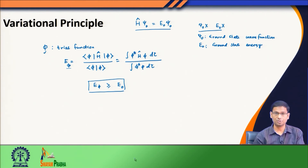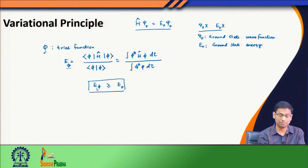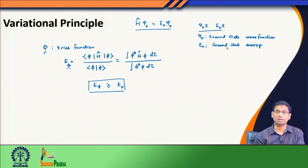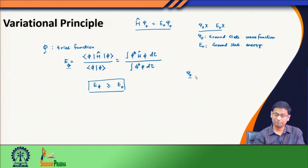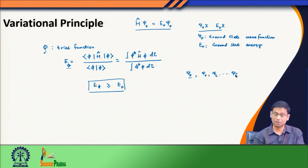What the variational principle tells me is that whatever value of E_φ you get, it is always going to be greater than or equal to E₀. If you do not know the exact solution ψ₀ and E₀, you can try with a trial function φ, evaluate the corresponding energy E_φ, and this energy is always going to be greater than E₀ — the true exact ground state energy. We can see this because ψ₀ would be the lowest eigenfunction of this Hermitian Hamiltonian, and the eigenfunctions ψᵢ form a complete set of orthonormal eigenfunctions.